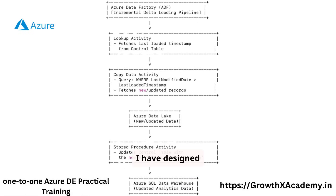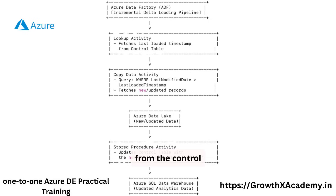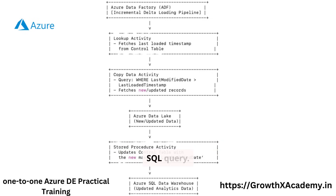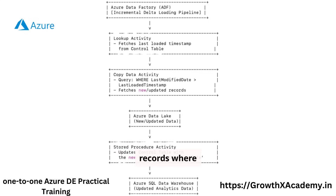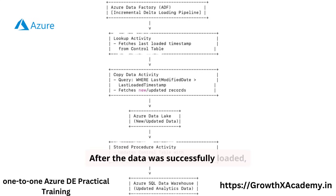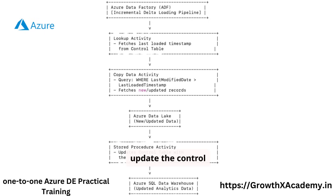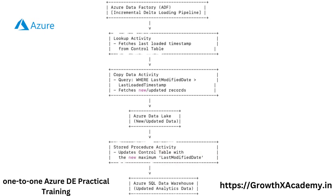The pipeline used a lookup activity to fetch the last loaded timestamp from the control table. Then we used a copy data activity with a dynamic SQL query. This query pulled only the records where Last Modified Date was greater than the last loaded value. After the data was successfully loaded, we ran a stored procedure to update the control table with the new maximum Last Modified Date.